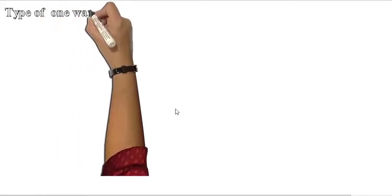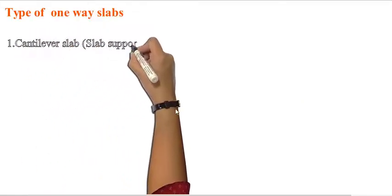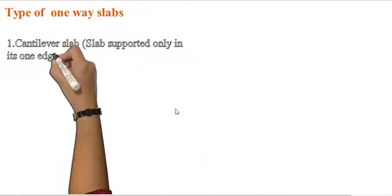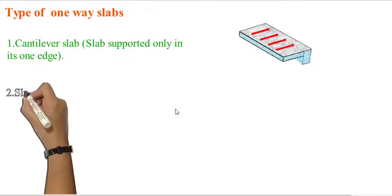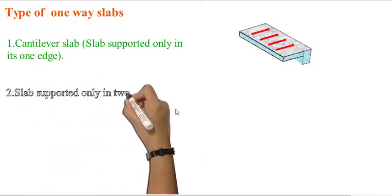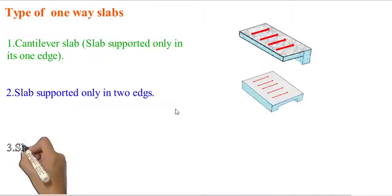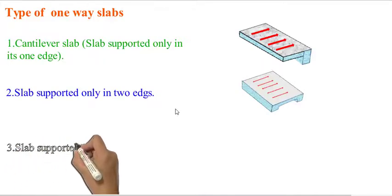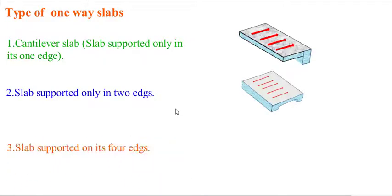Types of one-way slabs: the first one is a cantilever slab, supported only on one edge. The second one is a slab supported only on two edges. The third one is a slab supported on its four edges.